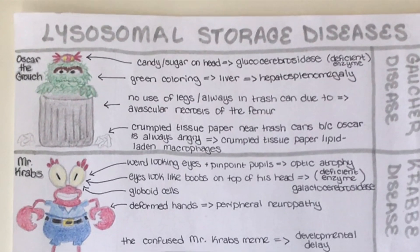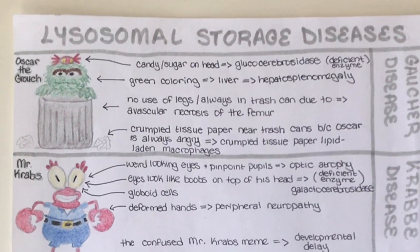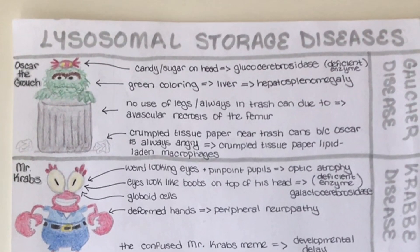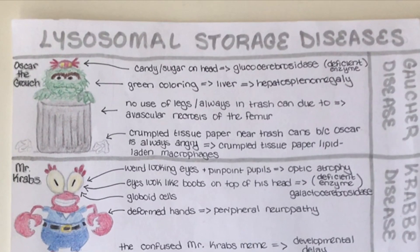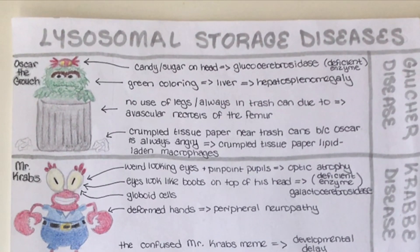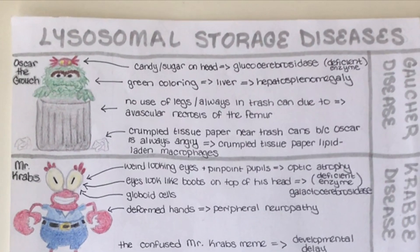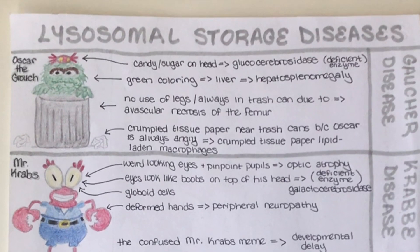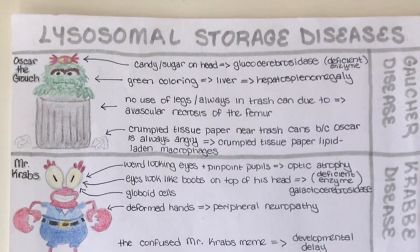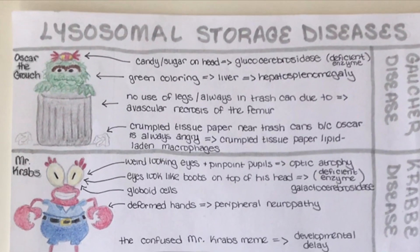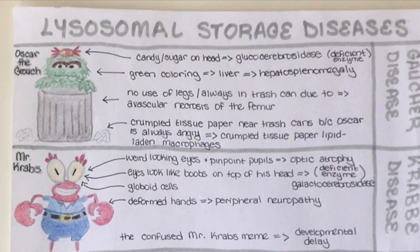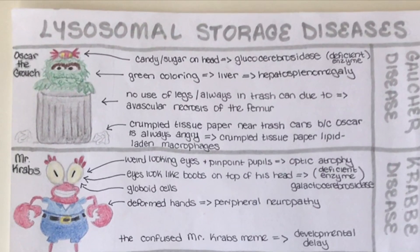We're going to start off with Gaucher's disease, the most common lysosomal storage disease. We're going to use Oscar the Grouch to help us remember the details. Starting with the green coloring of Oscar — this green coloring will help us remember the enlarged liver, or hepatosplenomegaly, seen in individuals with Gaucher's disease. There's also a piece of wrapped candy on top of Oscar's head to help us remember the deficient enzyme, glucocerebrosidase — glucose represents sugar or the candy, and cerebro represents brain or head.